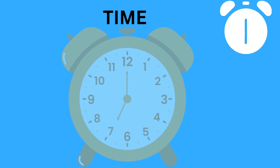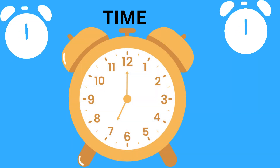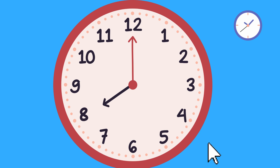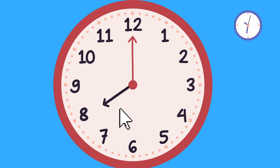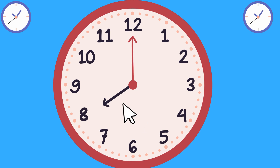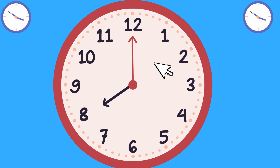Hello children. Today we are going to learn how to tell the time. This is a clock, and these are the hands — the long hand and the short hand. The short hand shows the hour and the long hand shows the minute.